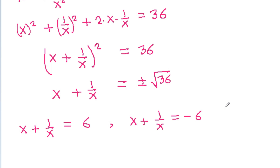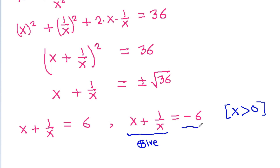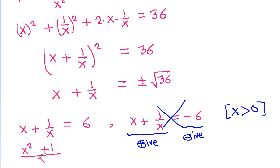We have given that x is greater than 0. That means x plus 1 by x will be positive, and minus 6 is negative, so x plus 1 by x equal to minus 6 is not possible. Therefore x plus 1 by x is equal to 6.